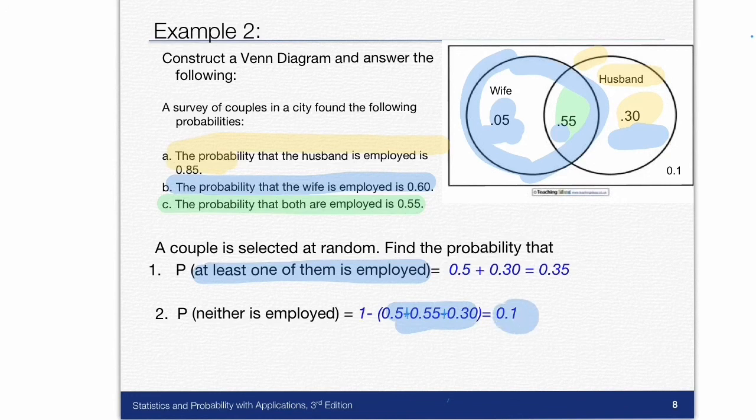Now if you remembered in your sample space to do that extra value that was outside the circles, then you already calculated this. If you didn't, then this is asking you to do that. What's the probability that neither employed? It's that 0.1, the value that sits outside.